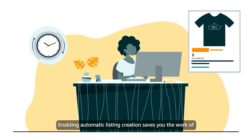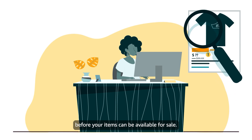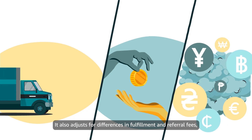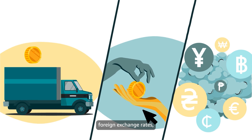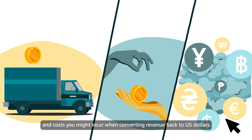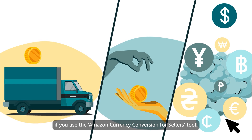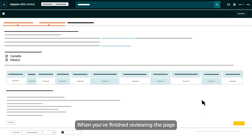Enabling automatic listing creation saves you the work of manually creating offers and evaluating pricing before your items can be available for sale. It also adjusts for differences in fulfillment and referral fees, foreign exchange rates, and costs you might incur when converting revenue back to U.S. dollars if you use the Amazon Currency Conversion for Sellers tool. When you've finished reviewing the page and making your selections, click Next.